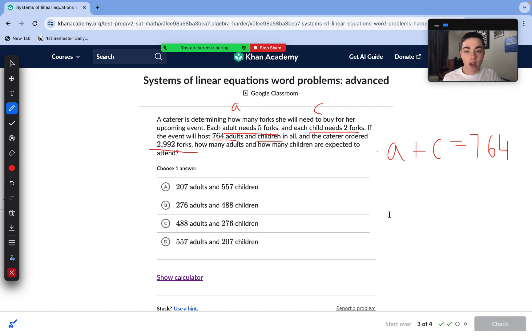One equation is going to be number of forks, one equation is going to be number of people. So our number of people equation is number of adults plus number of children equals the total number of people, 764. Then our next equation is number of forks. Each adult needs five, each child needs two, and there is a total of 2,992. Here I'm going to solve for the number of adults, so I need to isolate the child value. I subtract A from each side, so C equals 764 minus A.